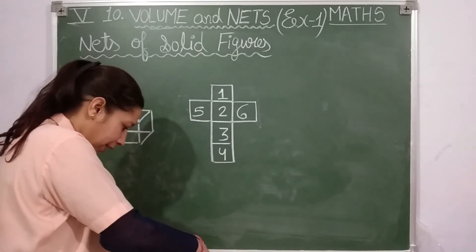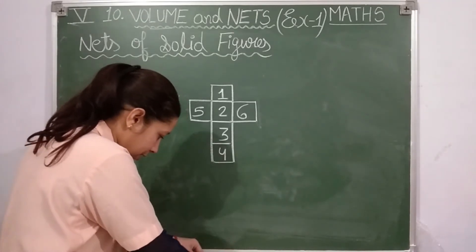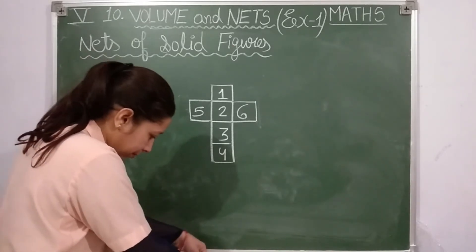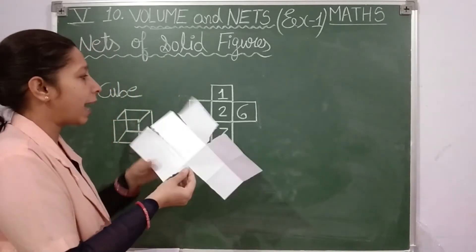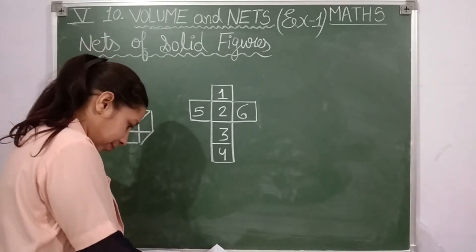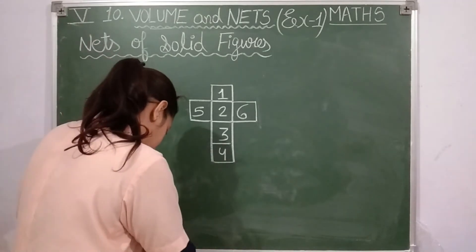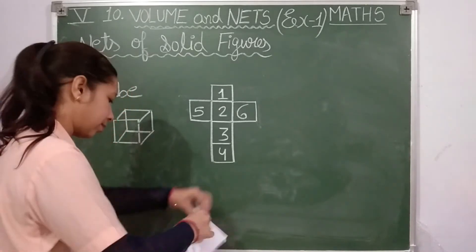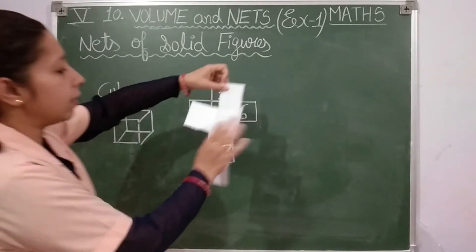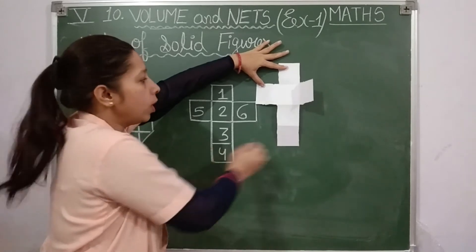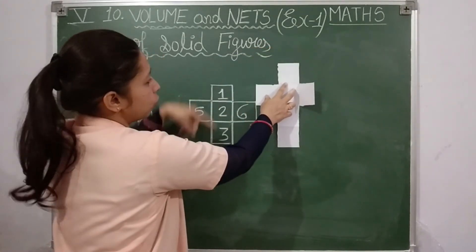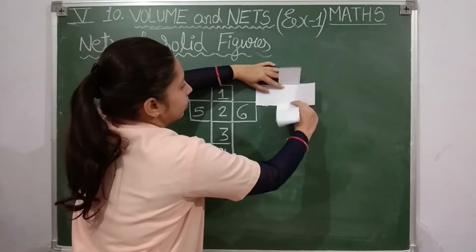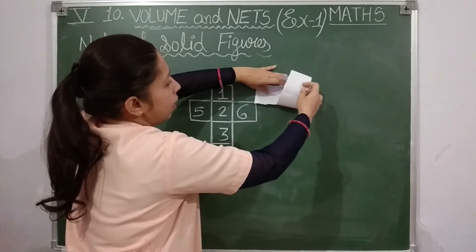This is an activity for you as well — you can also cut paper according to this sketch. Then together we can fold it into a cube. See, I am folding it step by step. The sketch is ready. Now let us join it and make a cube. Numbering is done: first fold, second fold, third fold, fourth fold.